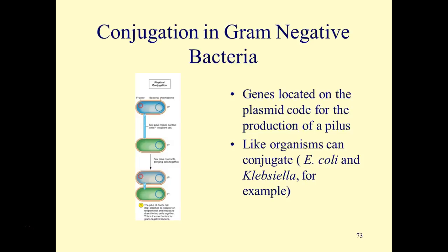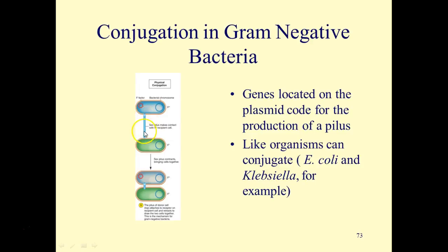Conjugation requires physical contact between two organisms. The organism on the top is a rod-shaped bacterium that houses an F-factor plasmid — a circular, extra-chromosomal piece of DNA. This cell is called an F-plus because it is capable of conjugating with an F-minus cell. The F-minus cell does not have this particular plasmid. Because of genes present on the F-factor itself, the pilus can be formed, and DNA can be transferred from the F-plus into the F-minus.